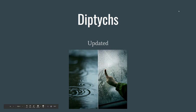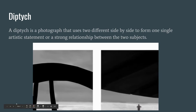In this video I'm going to talk about diptychs. What are diptychs? They are two pieces of art — two photos, two paintings, or anything else — that work better together than they do apart. They work together to form one single artistic statement, or they show a very strong relationship between the two subjects.